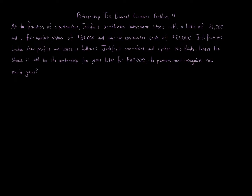Partnership tax general concepts, problem four. At the formation of a partnership, Jackfruit contributes investment stock with a basis of two thousand dollars and a fair market value of twenty-seven thousand dollars, and Lychee contributes cash of eighty-one thousand dollars. Jackfruit and Lychee share profits and losses as follows: Jackfruit one-third and Lychee two-thirds. When the stock is sold by the partnership four years later for eighty-seven thousand dollars, the partners must recognize how much gain?